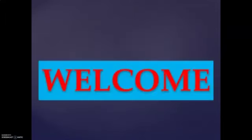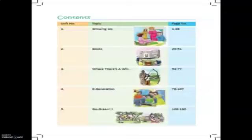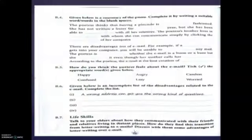Good morning children, welcome back to English virtual class. I hope you all are fine and you must have recited the poem which I told you. Today again we will continue with the poem — we will do the back exercise of E-Generation B section. The poem is 'I Have Got Email,' so you must have recited that poem so that you can do the exercise. Now let's start the back exercise.